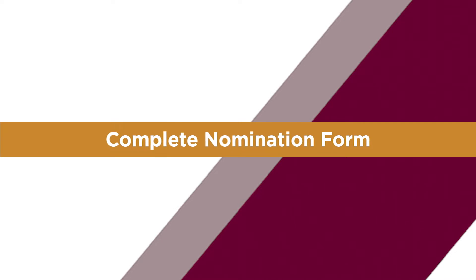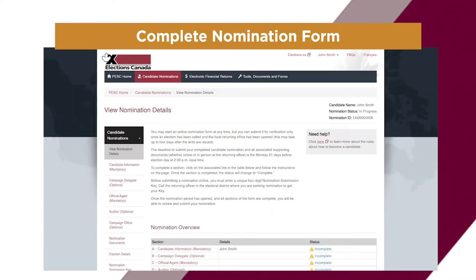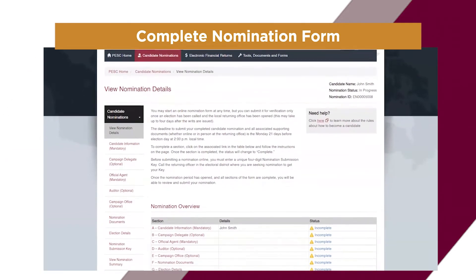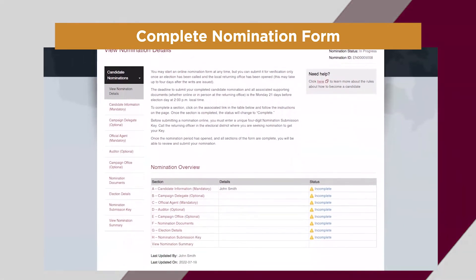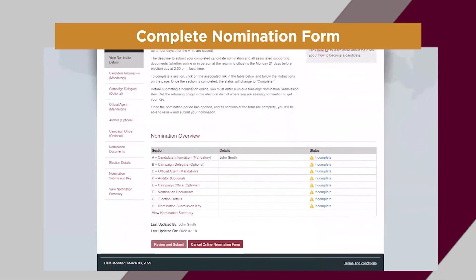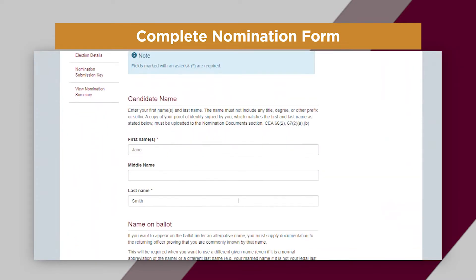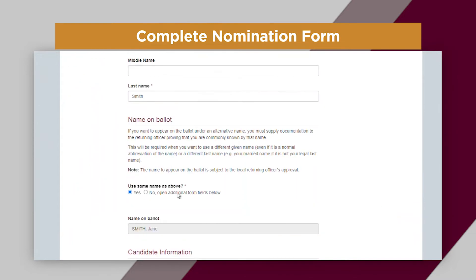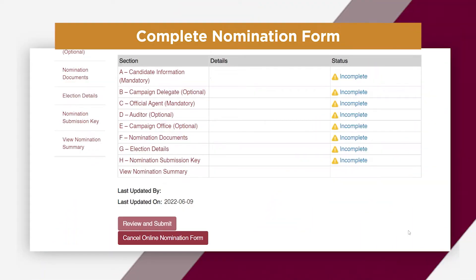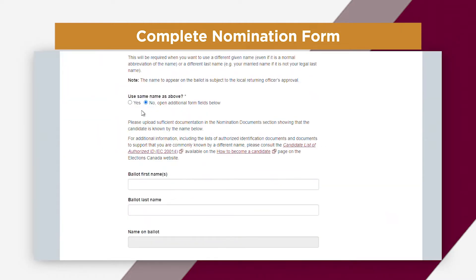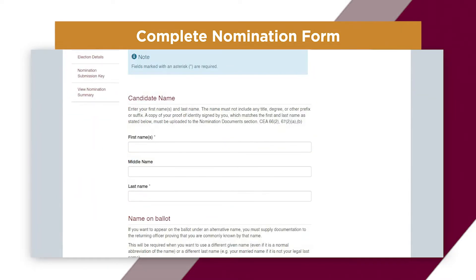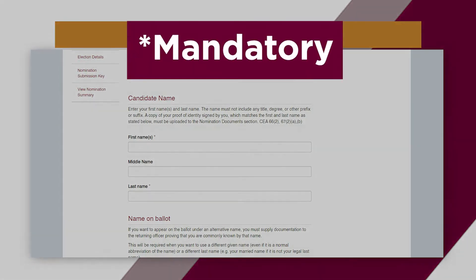To complete the nomination form, go to the nomination overview table, where candidates and their delegates can complete the rest of the sections. If you are a campaign delegate, do not forget to finish completing the information in the candidate form. Select a section to work on and complete the fields on the screen when prompted. Mandatory fields must be completed.